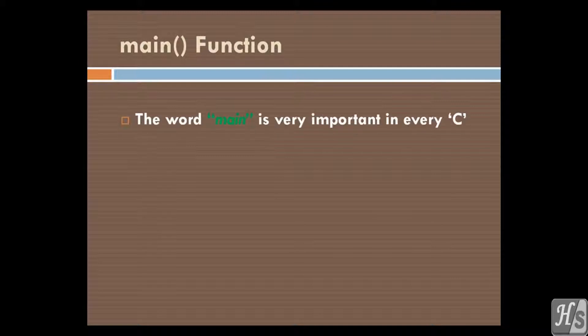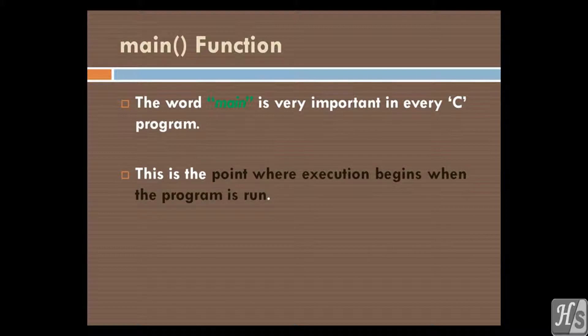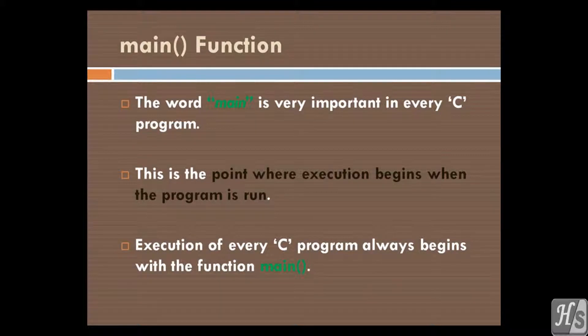Main function. The word main is very important in every C program. This is the point where execution begins when the program is run. Execution of every C program always begins with the function main.